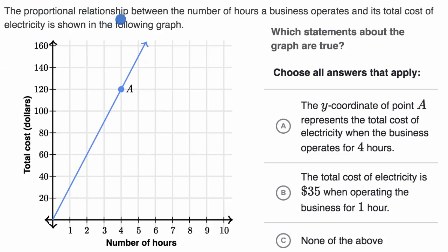We are told the proportional relationship between the number of hours a business operates and its total cost of electricity is shown in the following graph. Which statements about the graph are true? Choose all answers that apply. Pause this video and see if you can figure this out.